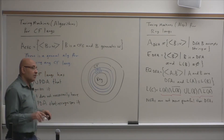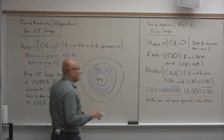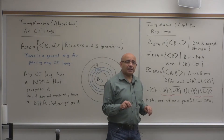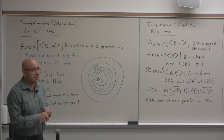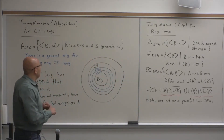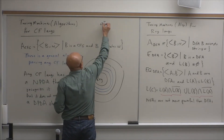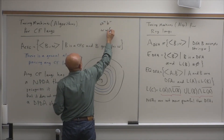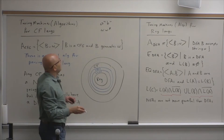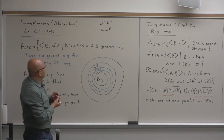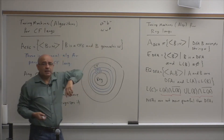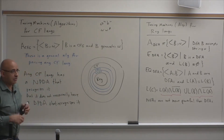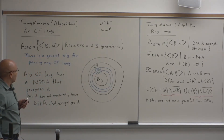Some languages, like the two examples we studied for push-down automata — ANBN and WWR — illustrate this difference. In fact, ANBN has a deterministic push-down automaton, but WWR does not have a deterministic push-down automaton to recognize it.